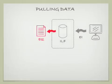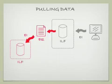Now, what makes pulling data a little bit different is that the EQ is pulled from the gray ILF by the red application. So everything is the same except the red application also counts a red EIF.